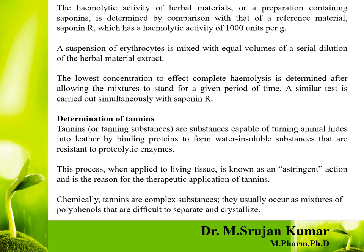A suspension of erythrocytes is mixed with equal volumes of serial dilutions of herbal material extract — such as 2, 4, 6, 8, and 10 micrograms per ml. You then check for the lowest concentration of herbal material extract which causes complete hemolysis. The same procedure and dilutions are carried out for the reference material saponin R, and based on comparison, the saponin measurement is determined.